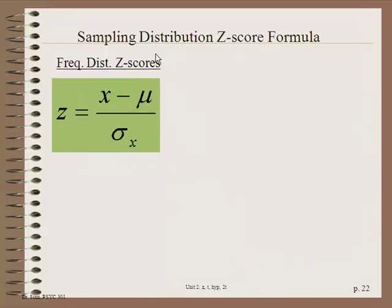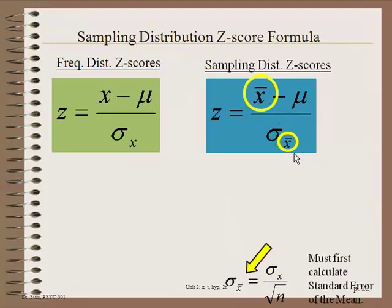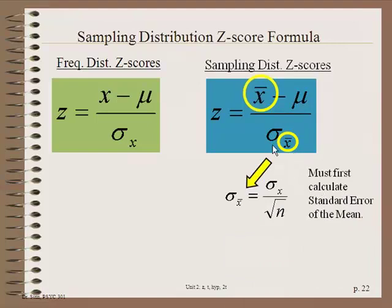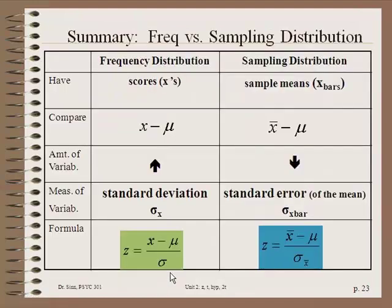For a frequency distribution with just an individual score — like your score on the SAT — you would use Z equals X minus mu divided by standard deviation. The sampling distribution Z-score is different: you have X-bar and sigma-X-bar, where X-bar is the sample mean and sigma-X-bar is the standard error. We typically don't know that and need to calculate it. Standard error of the mean is the typical deviation of sample means around the population mean, or another way of saying it: the measure of variability in a sampling distribution.